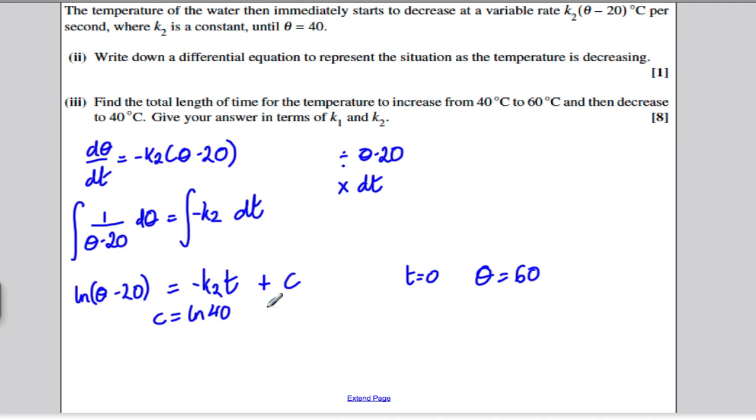So this constant, ln 40, I'm going to write that back into the solution, except I'm going to subtract it from both sides so it ends up on this side. And I'm going to get that ln theta minus 20, subtract ln 40, is going to be equal to minus K2t. And maybe combining our lns here, this would give us that ln theta minus 20, all divided by 40, would be equal to minus K2t.